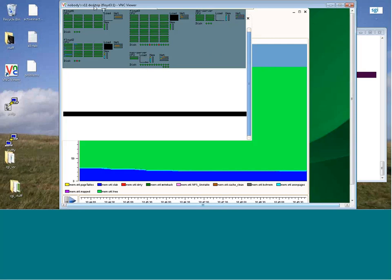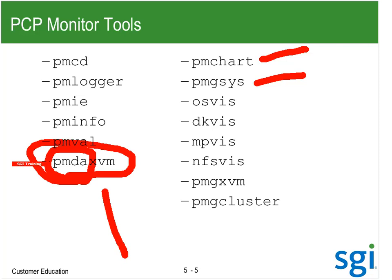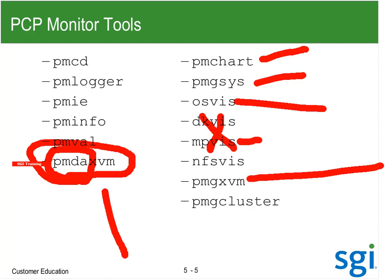I don't ever use OSViz. DKViz and MPViz don't perform very well on large systems — on a 1,000 CPU system, MPViz was impossible to use. PMG XVM I'll use later, now that PMDA XVM is running, and I did just demonstrate PMG cluster.